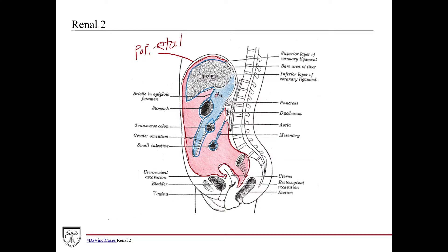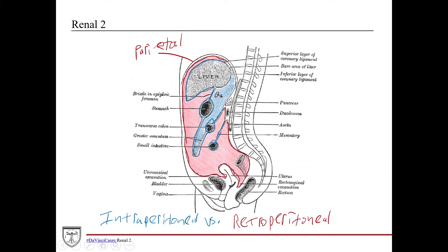Intraperitoneal versus retroperitoneal — to really understand that, a retroperitoneal organ is, it's in the name: retro, behind. So it's going to be posterior. You can see organs like the aorta, for example — it's labeled here, it's retroperitoneal, it's behind the peritoneum. It just means it's not surrounded by the peritoneum, versus the stomach or liver which are intraperitoneal.